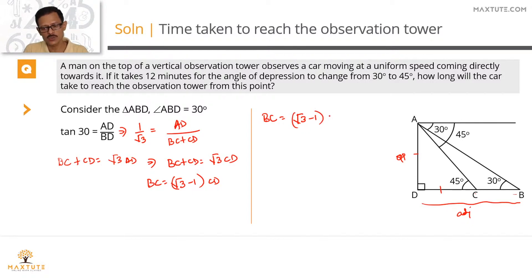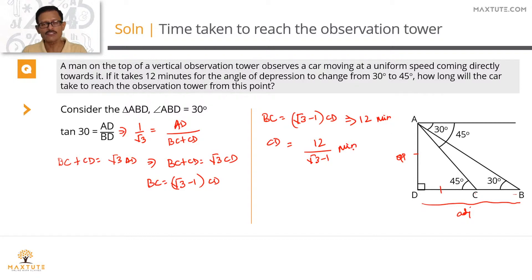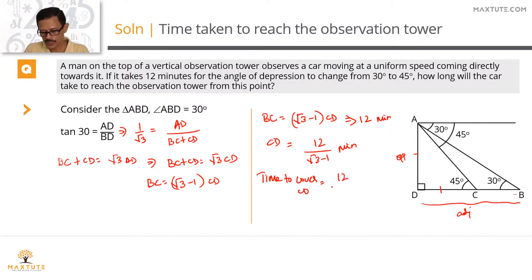To cover the distance BC, which equals (root 3 minus 1) times CD, the car takes 12 minutes. So to cover CD, it will take 12 divided by (root 3 minus 1) minutes. We can rationalize by multiplying and dividing by the conjugate, root 3 plus 1, over root 3 plus 1.